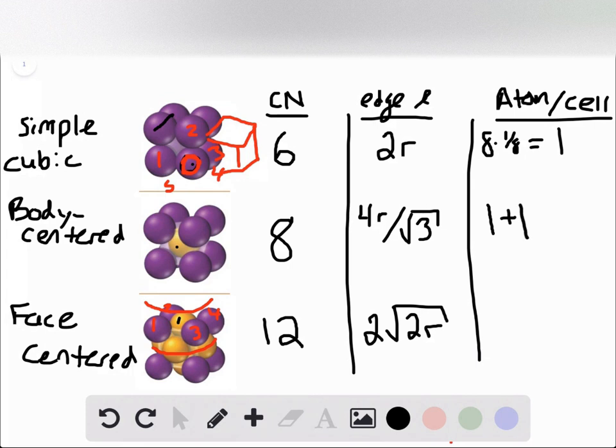But then there's also an atom in the center of this cell. It's body-centered, it's completely within the cell, which means that the number of atoms per cell in a body-centered cell is two.